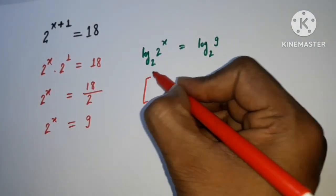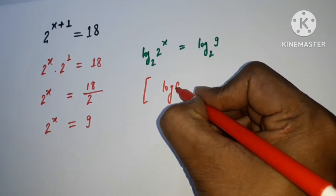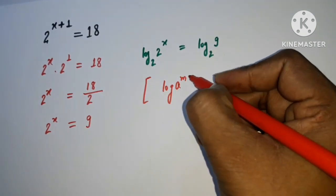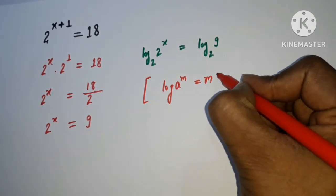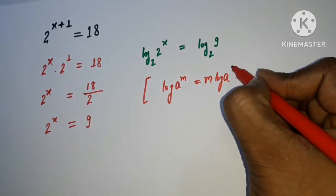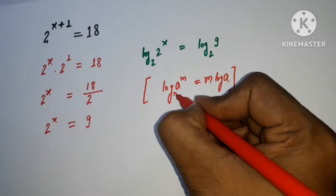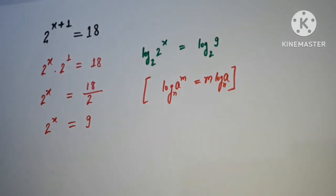If suppose log base a of a^m, that m will come in front of log a. And the base, whatever base we have here, the base will be as it is. There is no change to the base.